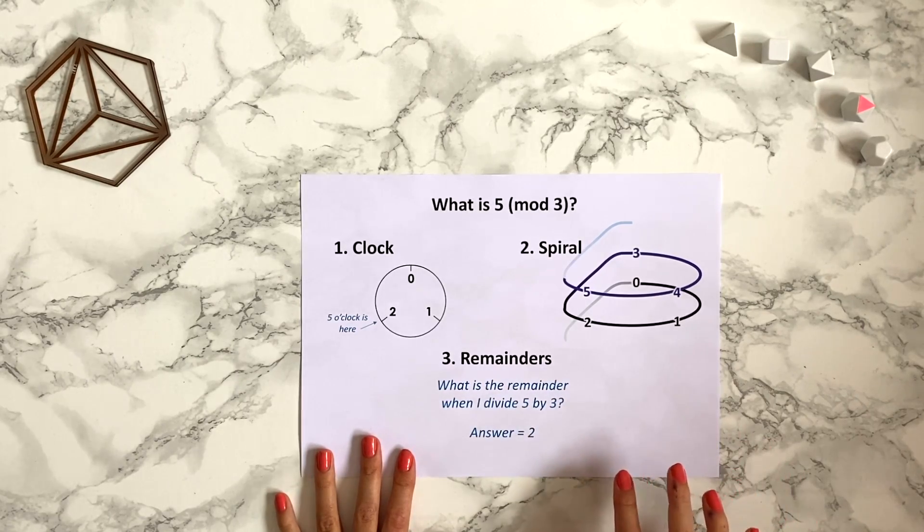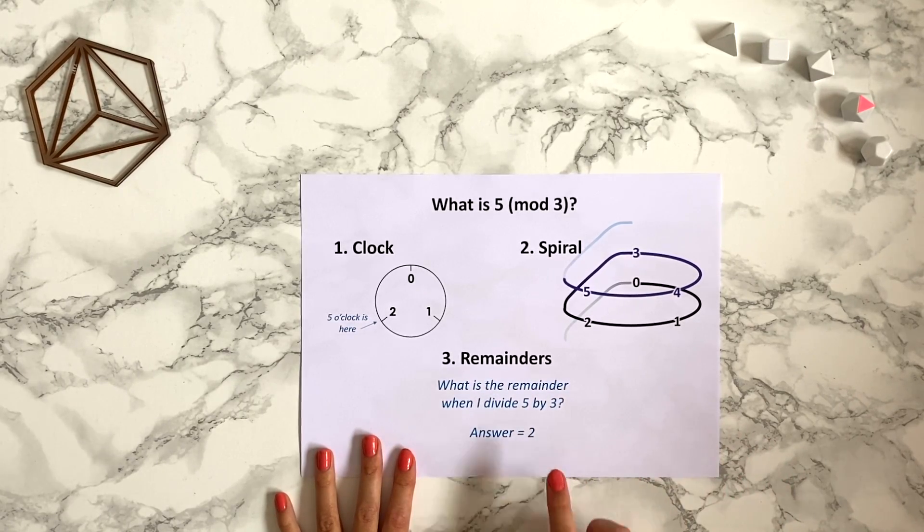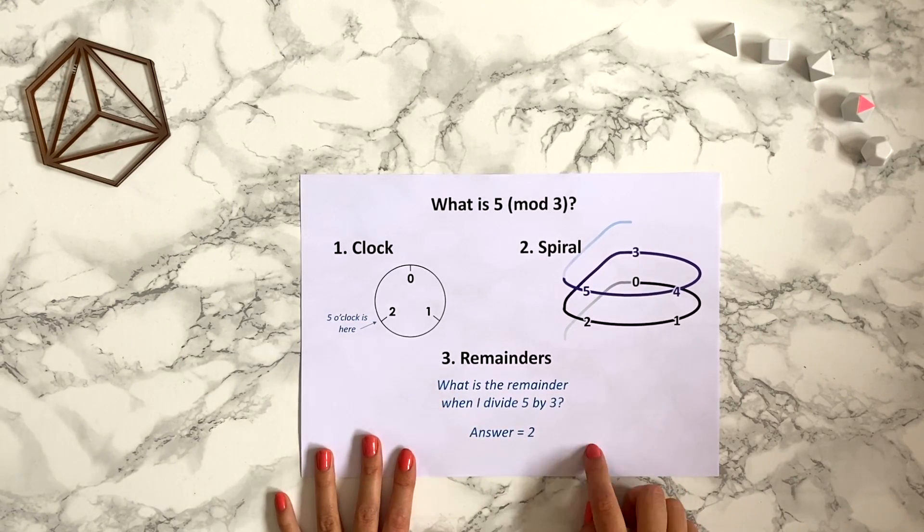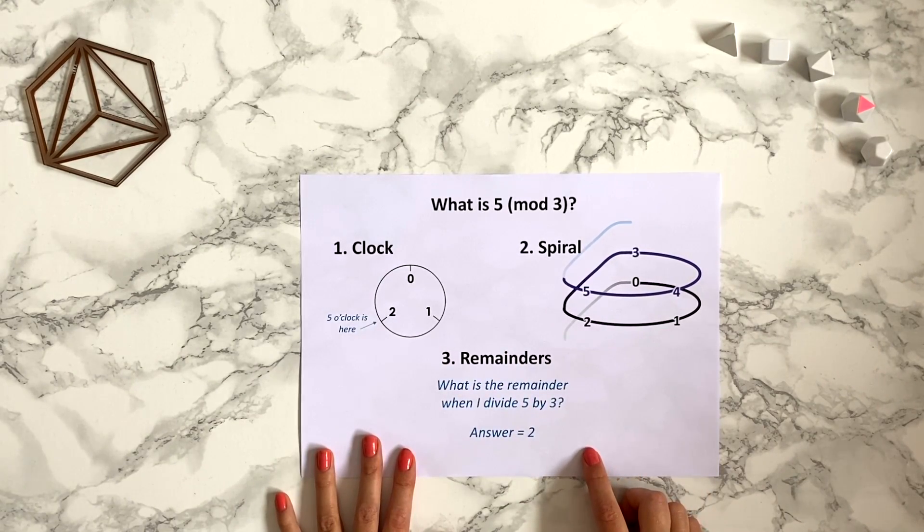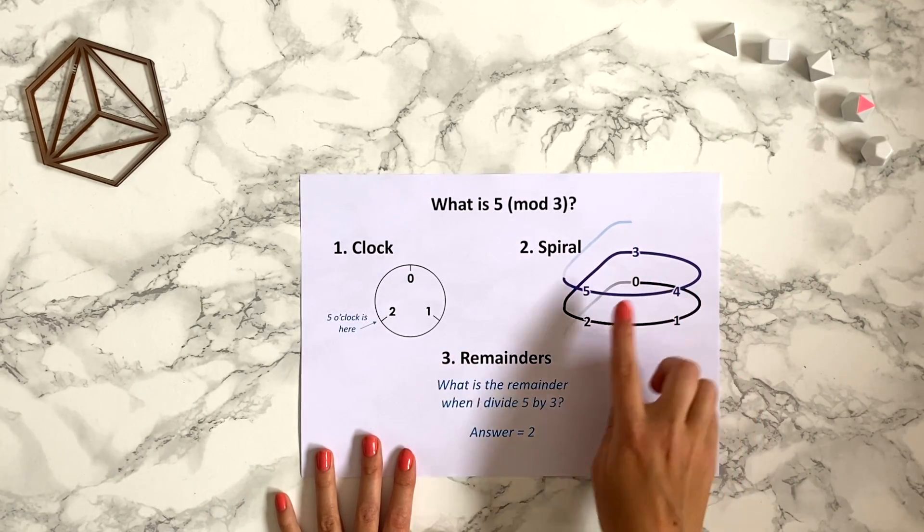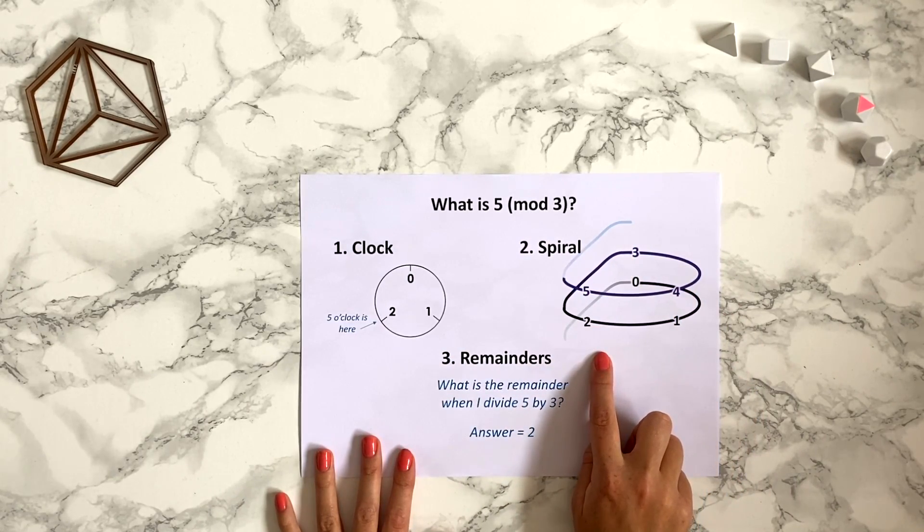So lots of fellow students I've spoken to tend to think about modular arithmetic in different ways, so it's really up to you which way you prefer to think about it. Each way of thinking about modular arithmetic might have different benefits at different times. For instance, this spiral method is helpful when thinking about negative numbers.